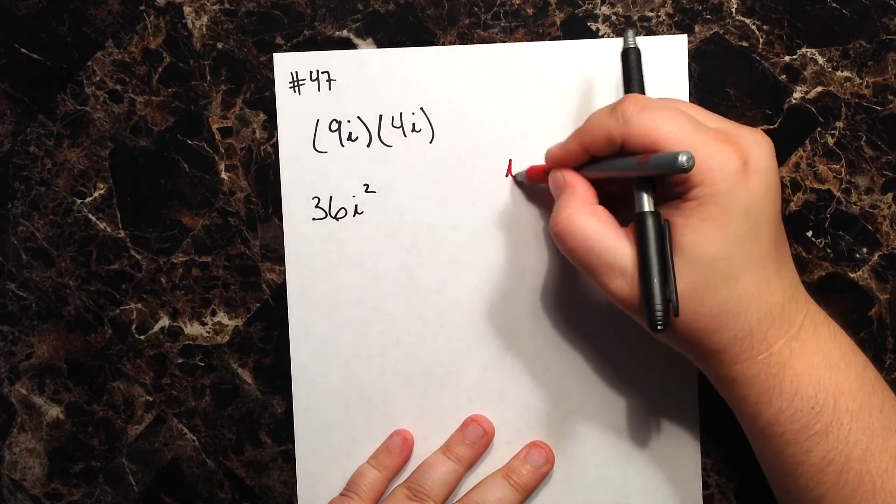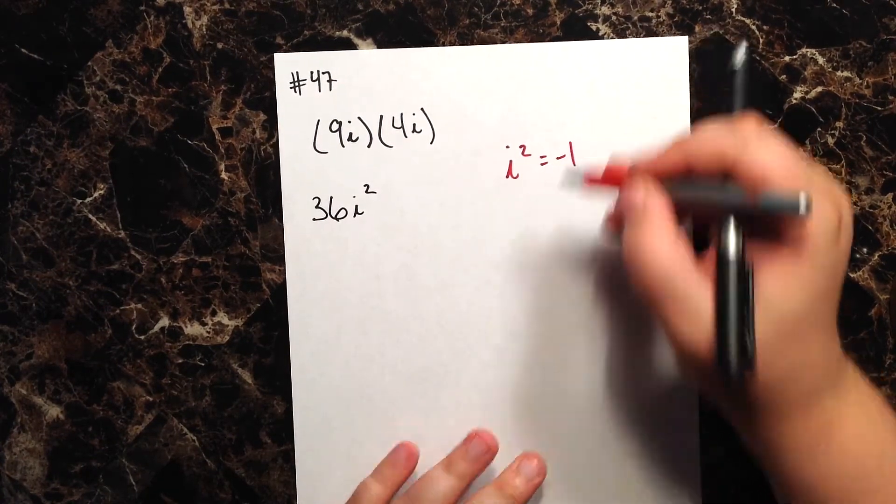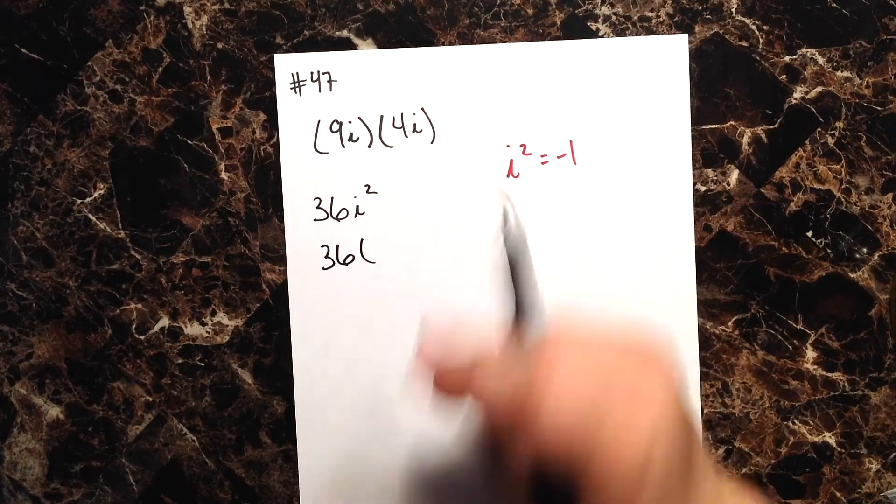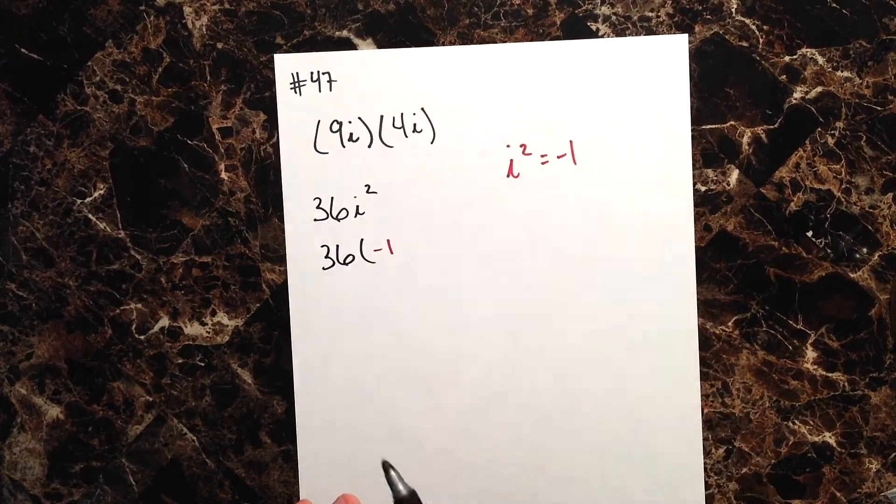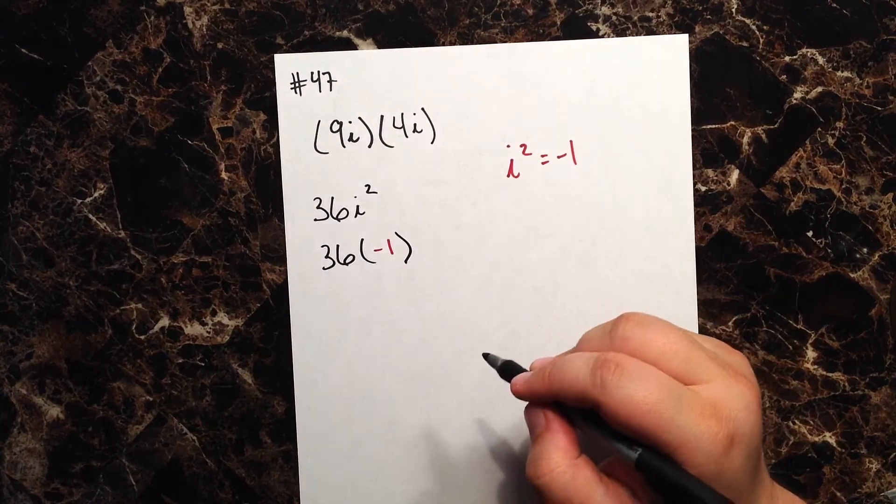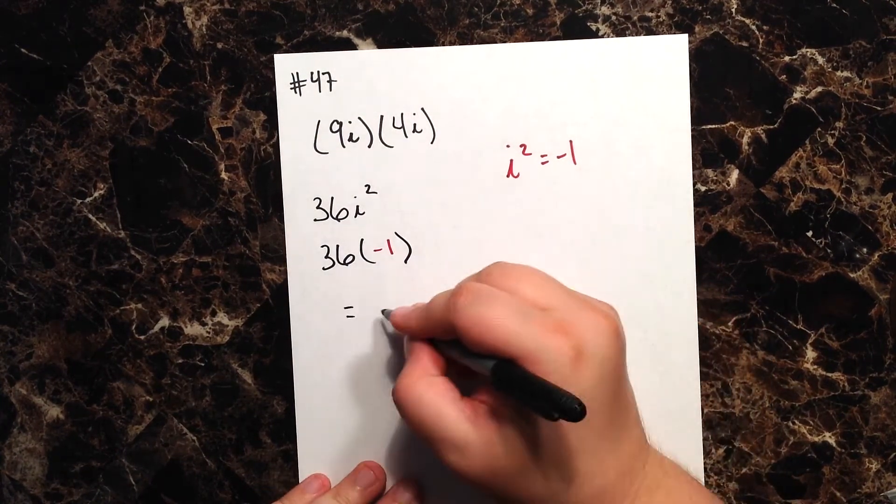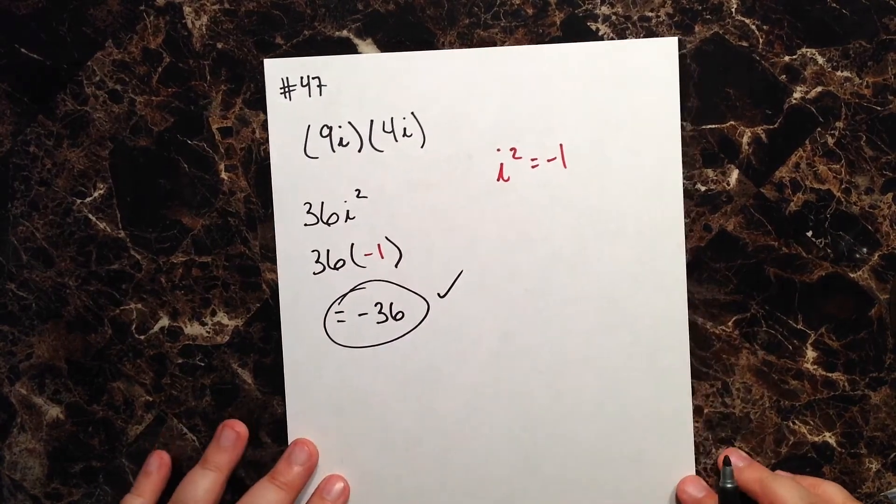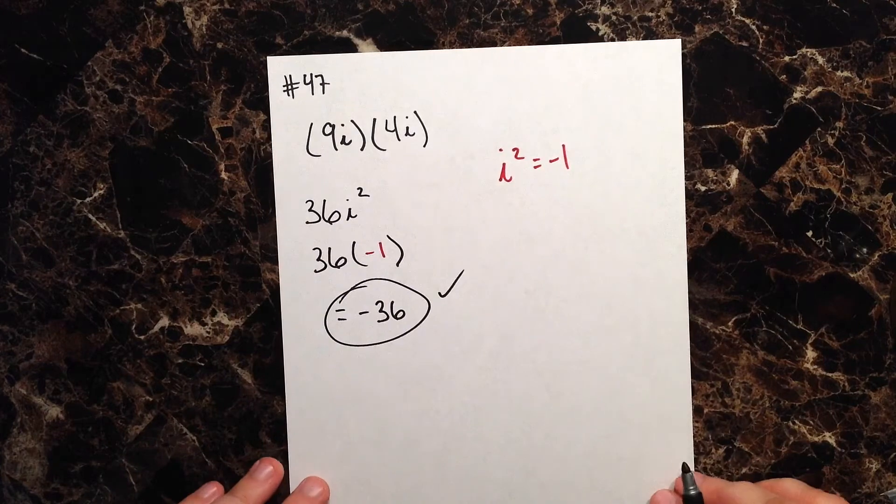You'll recall that i squared equals negative 1, and so really this is saying 36 times negative 1. Well, what is 36 times negative 1? That's just negative 36, and we'll call it a day there.